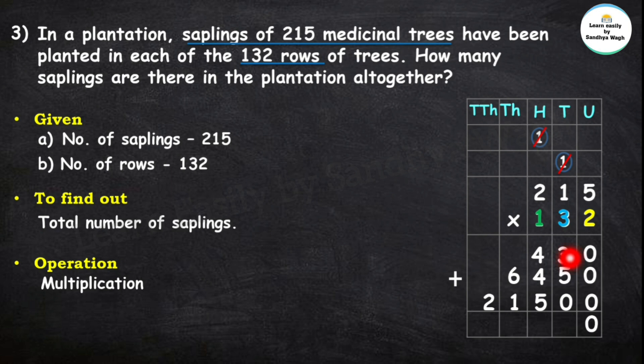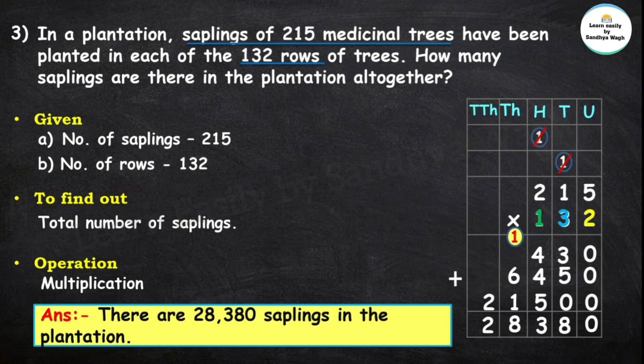Now let's add these numbers: 3 plus 5 plus 0 is 8; 4 plus 4 plus 5 is 13 — write 3, carry 1; 6 plus 1 is 7, plus 1 is 8; and 2. So here our final answer is: there are 28,380 saplings in the plantation.